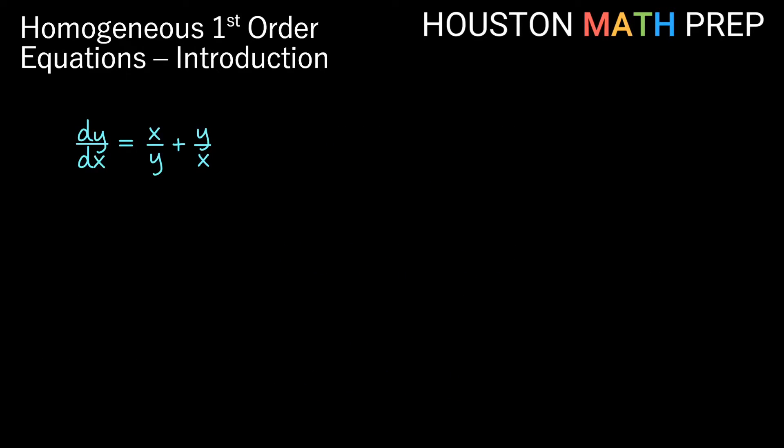We'll go ahead and work out one simple introductory example in this video. We also have an additional video with several examples of homogeneous first-order equations. You can check that out after this if you'd like to see more. So we have dy/dx equals x/y plus y/x. The first thing I want to do is make sure, is this homogeneous? And the way we do that is remember we check to see is f(x,y) equal to f(tx,ty). So if we go ahead and plug in tx for x and ty for y, then we would get f(tx,ty) equals